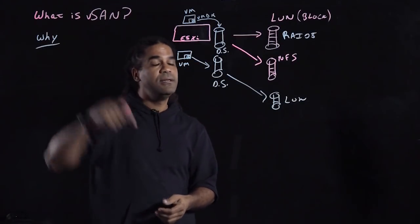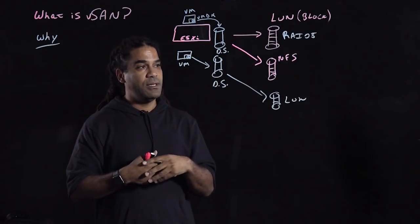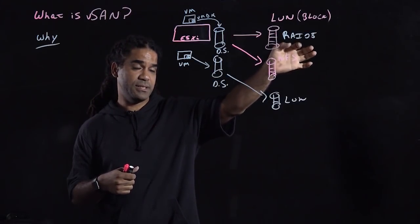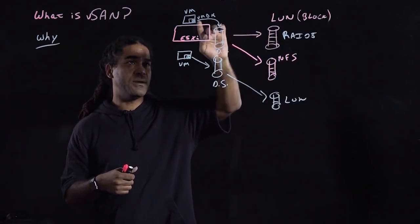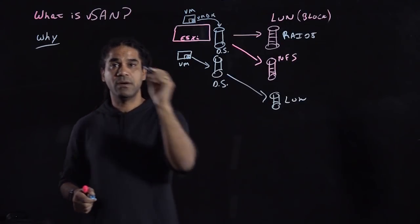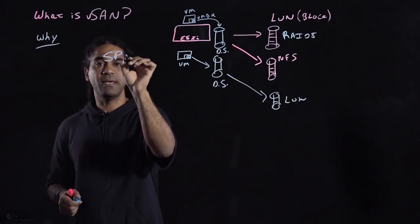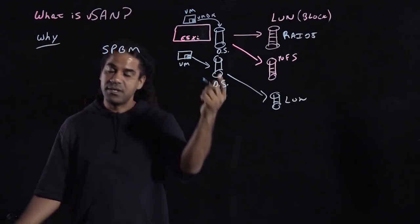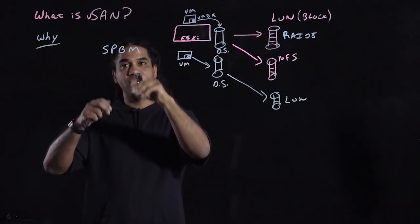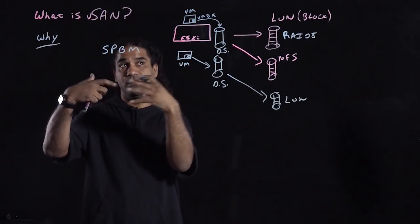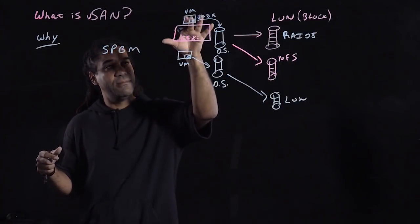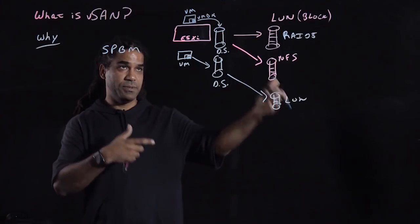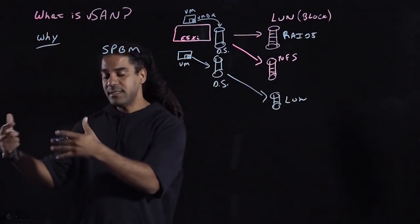So vSAN was put together or created so that you migrate the need of having the services configured on the storage side of the house, and you put it on the VM storage side of the house with something that VMware calls SPBM, which stands for Storage Policy Based Management. By having the ability of setting policy or services for storage directly on the VM, it allows you to speed up the consumption of the storage services by the VM.